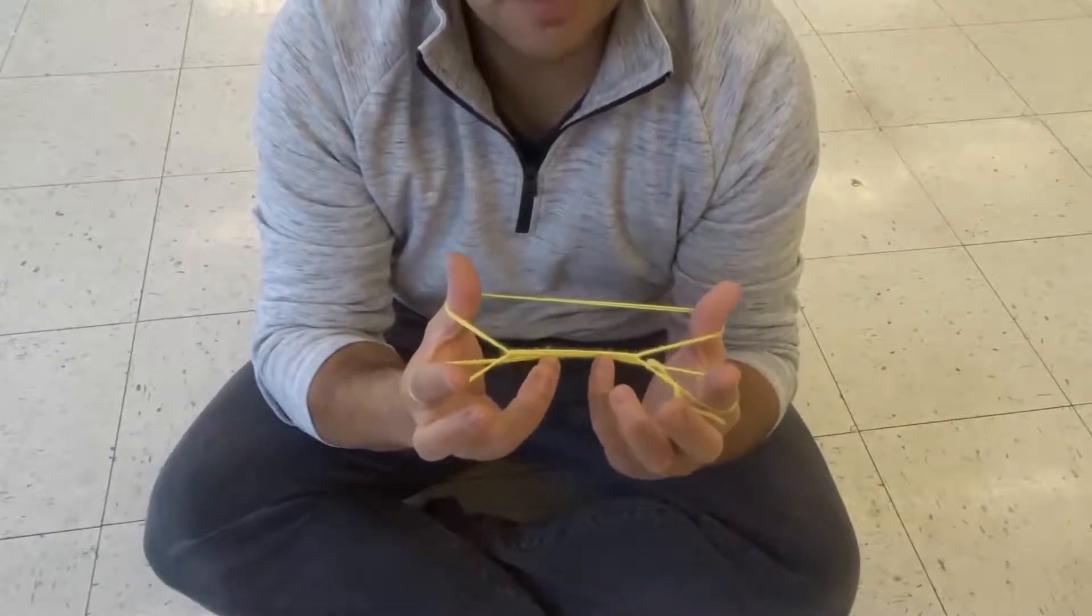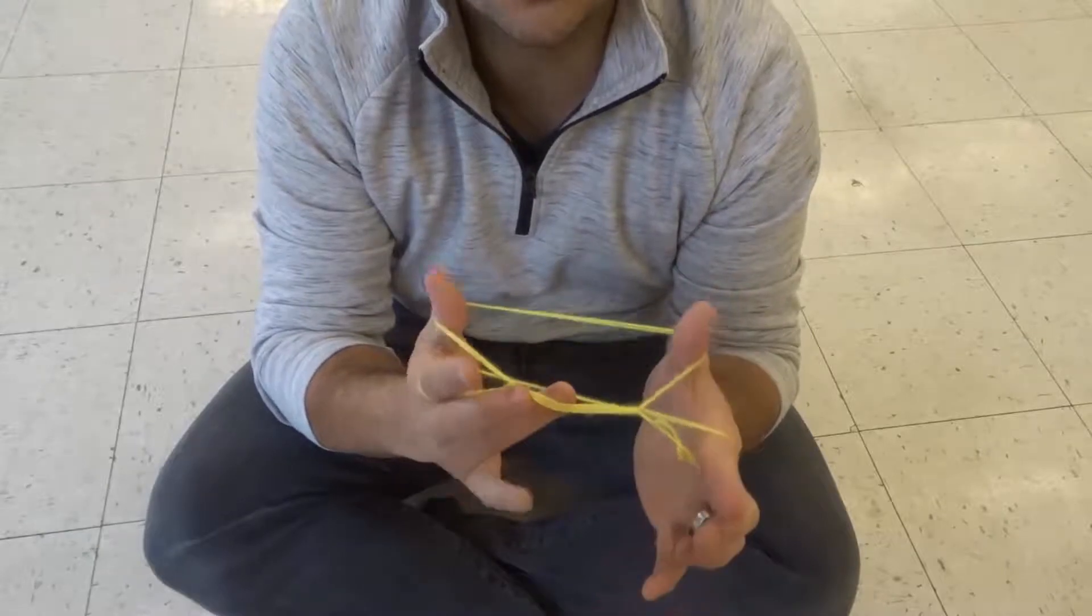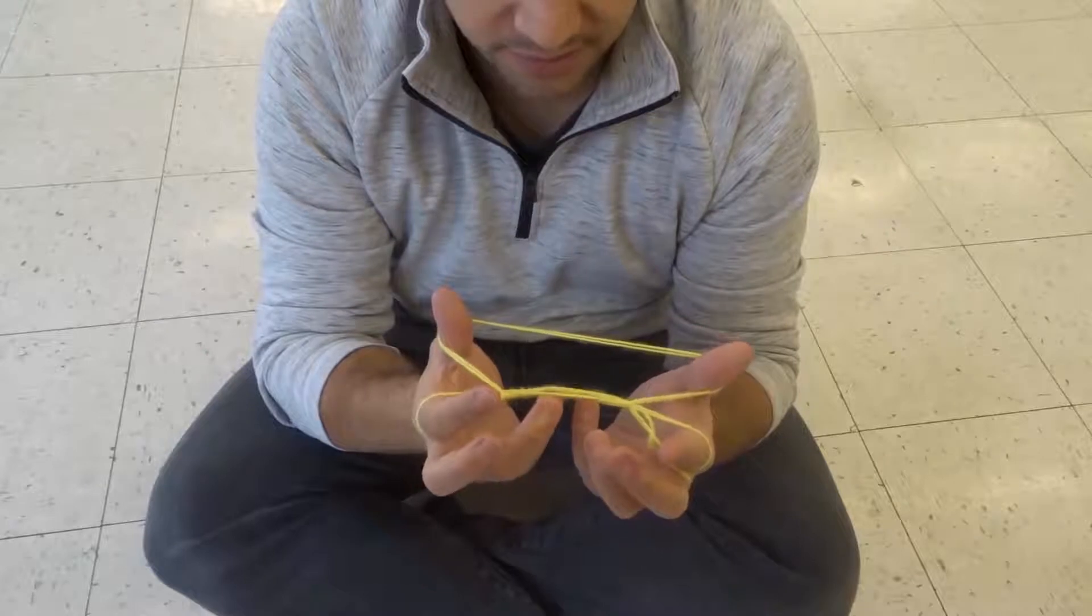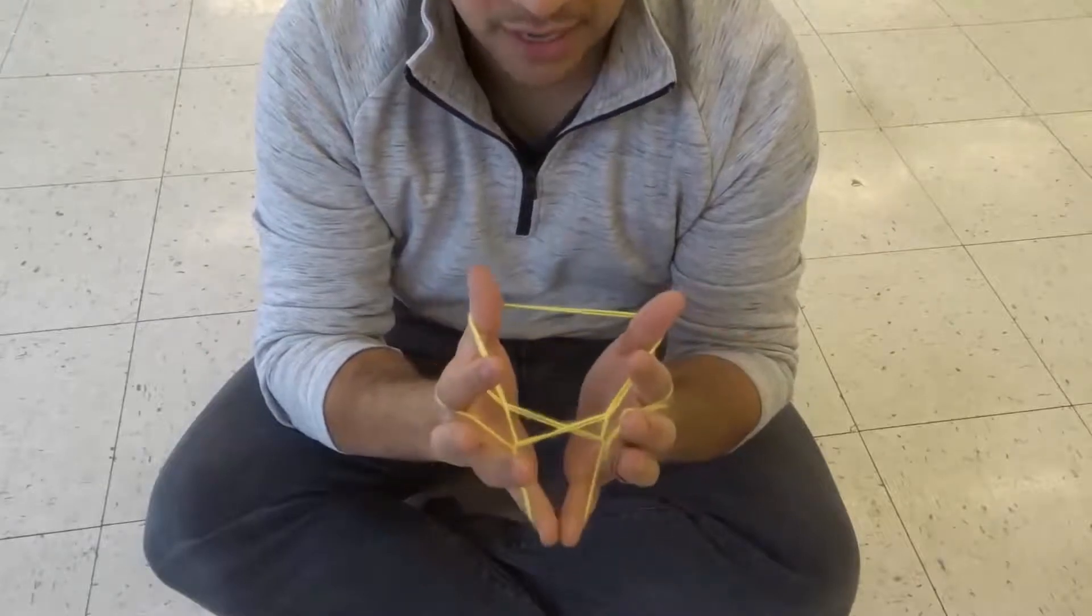Now close to where your pinkies are, there's going to be a loop, as you can see right there—a hole. So I'm going to take my pinkies and put them in the hole and stretch them out like that.